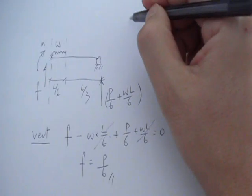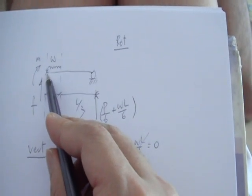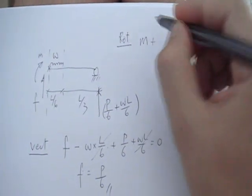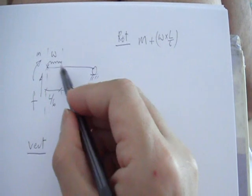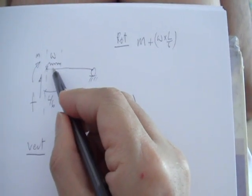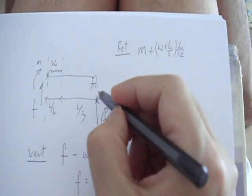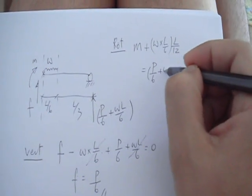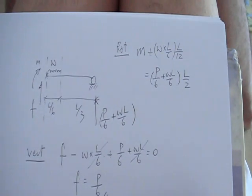Then you can see the rotation. Rotation about, let's say, this point. So M, that's clockwise, and then there will be a moment due to the distributed load, which is also clockwise. So it's in the same direction of M: w times L over 6, that's the total load here, and it's acting at the center, so it's L over 12 from the left end. Then you have an anticlockwise moment. That is balanced by the anticlockwise moments due to the reaction, and this force times the distance here is L over 2.